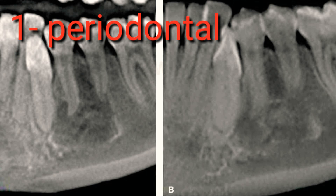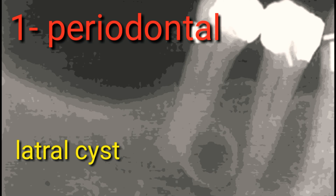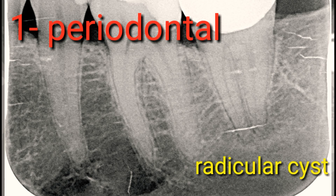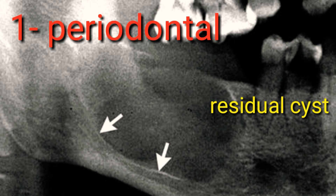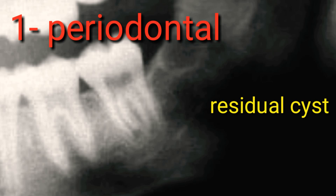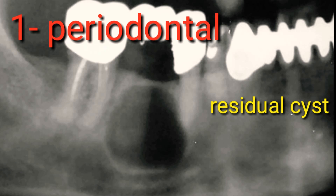Developmental dental or odontogenic cysts such as Periodontal cysts are formed from epithelial rests or remnants in the periodontal membrane. The usual location is along the lateral surface of the teeth, termed lateral cyst, or at the apex of the tooth, termed radicular cysts. Cysts of inflammatory nature in edentulous areas are termed residual cysts, resulting from incomplete surgical removal of pathological tissue at the time an infected tooth is extracted.